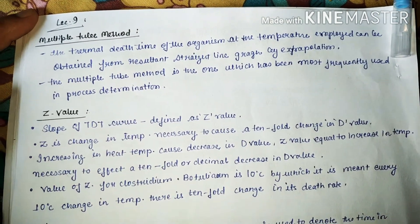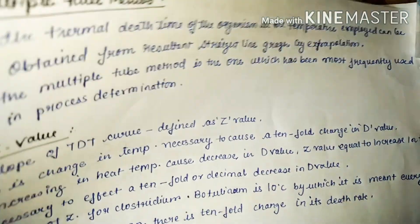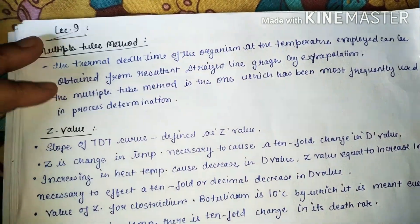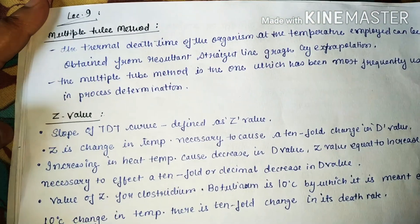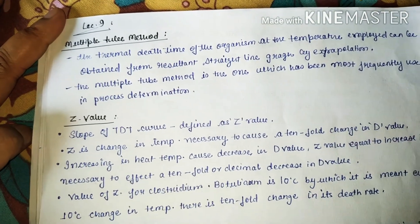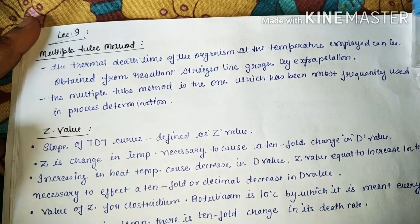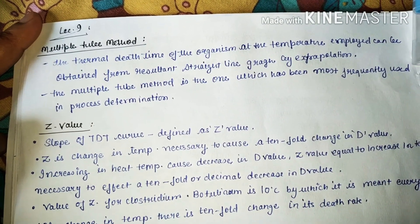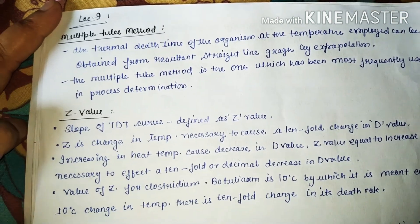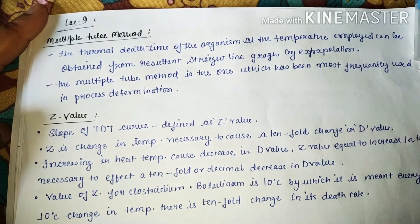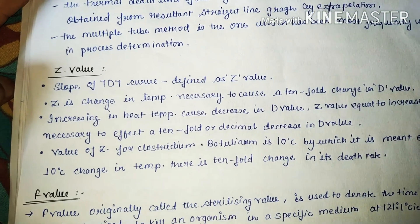Proceeding on lecture number 9, that is the multiple tube method. We have studied about the single tube method. The multiple tube method is another method which is a modification of the single tube method. In this method, the thermal death time (TDT) of the organism at the temperature employed can be obtained from the resultant straight line graph by extrapolation. The multiple tube method is the one which has been most frequently used in process determination.